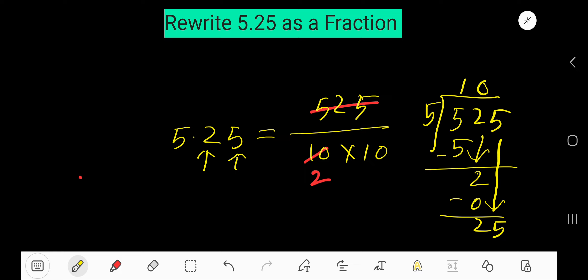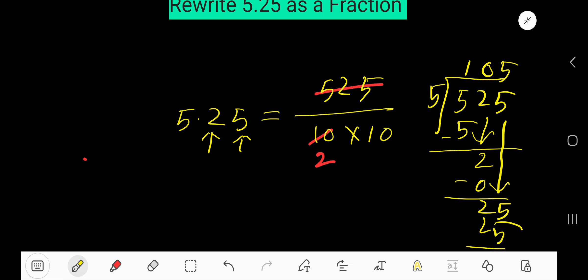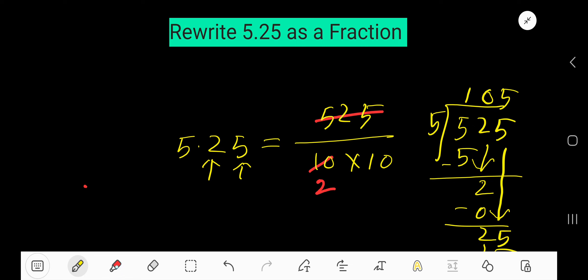5 goes into 25 how many times? 5 times. 5 times 5 is 25. That is, you are getting 105.